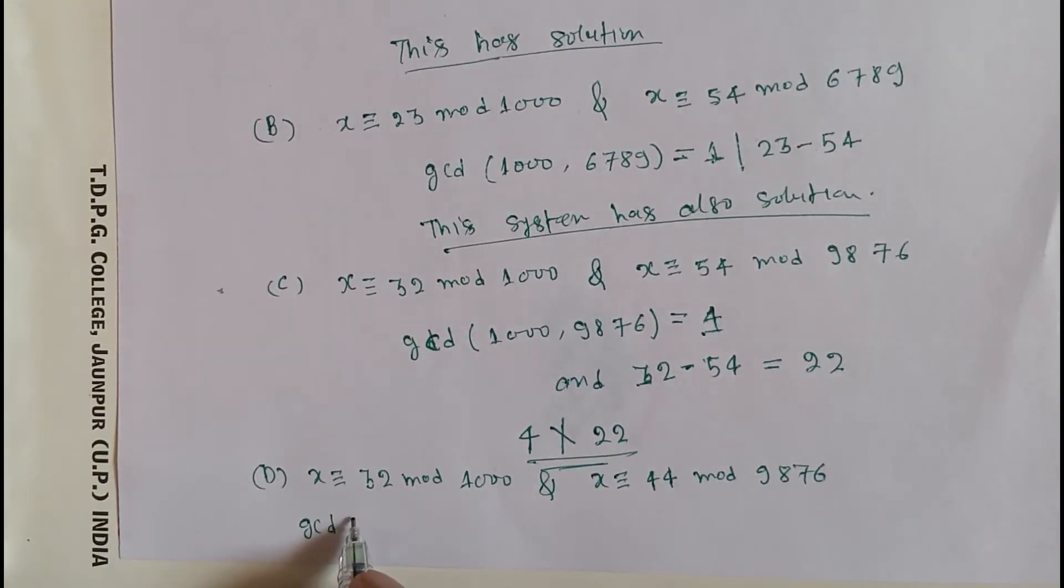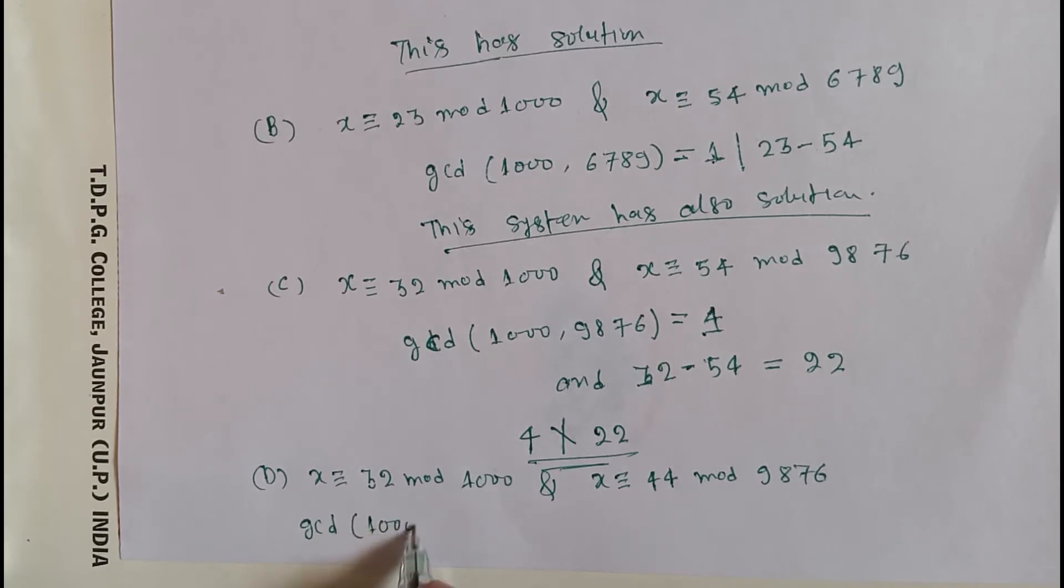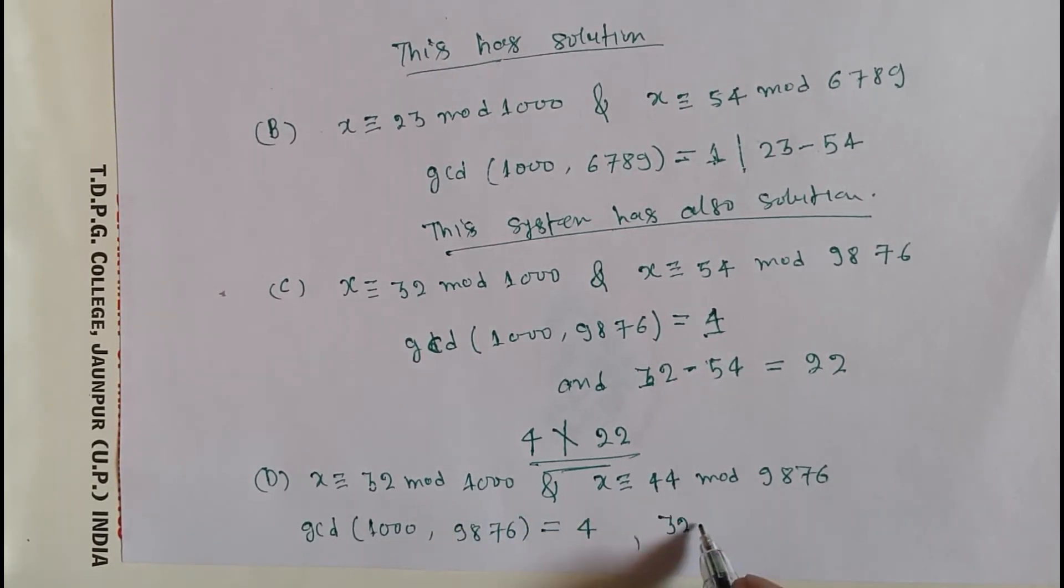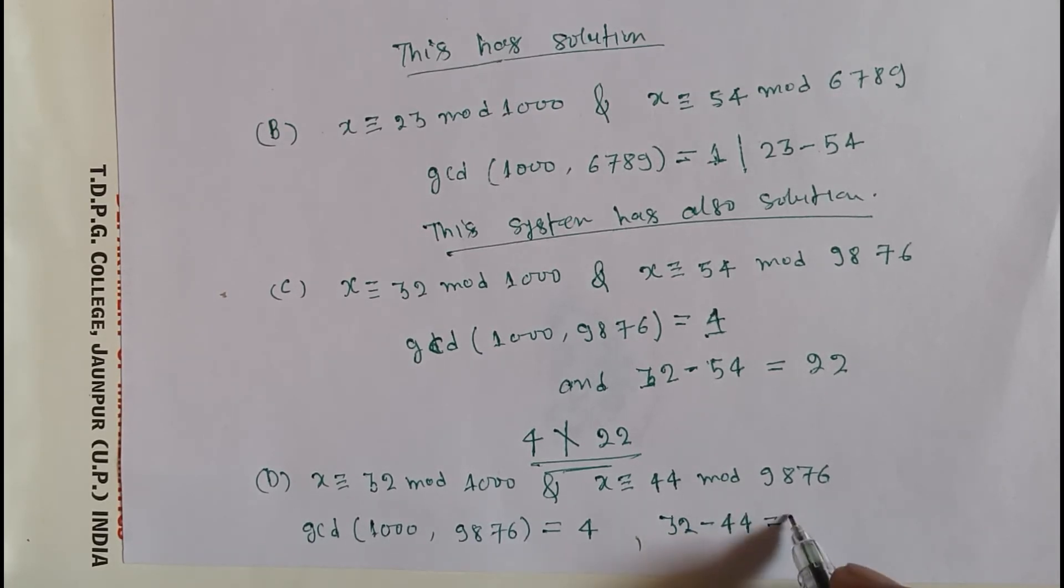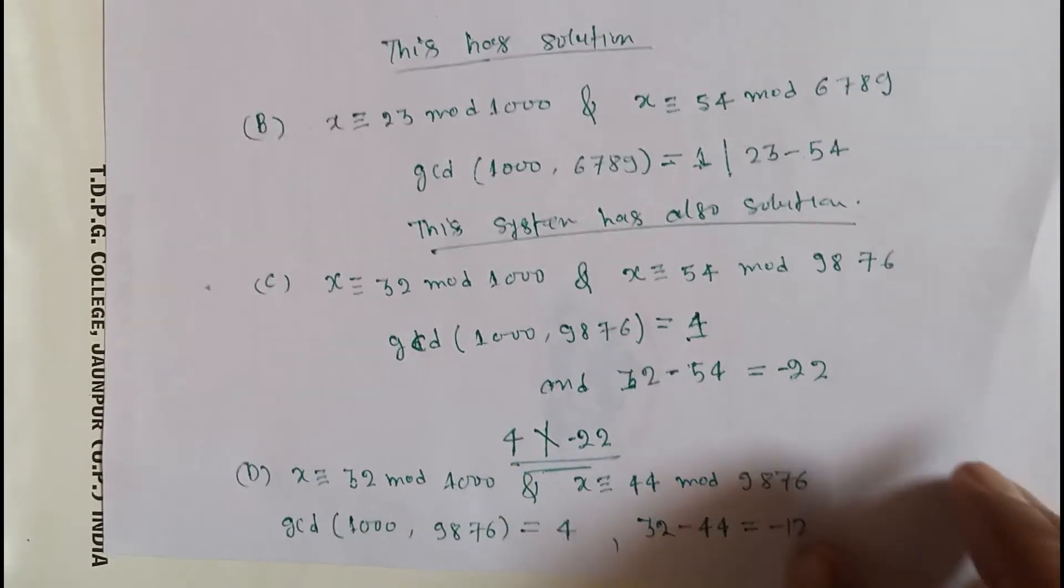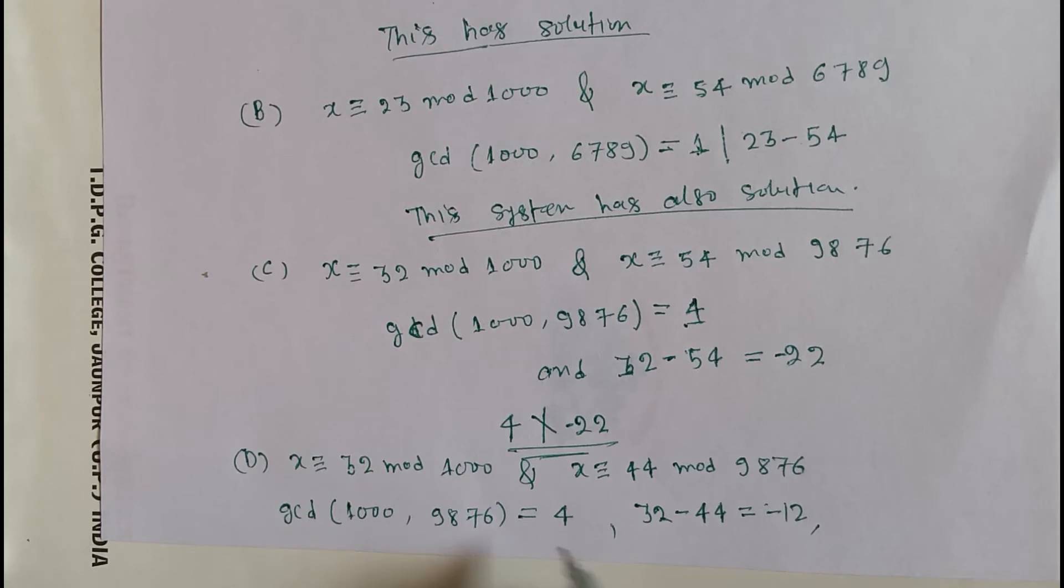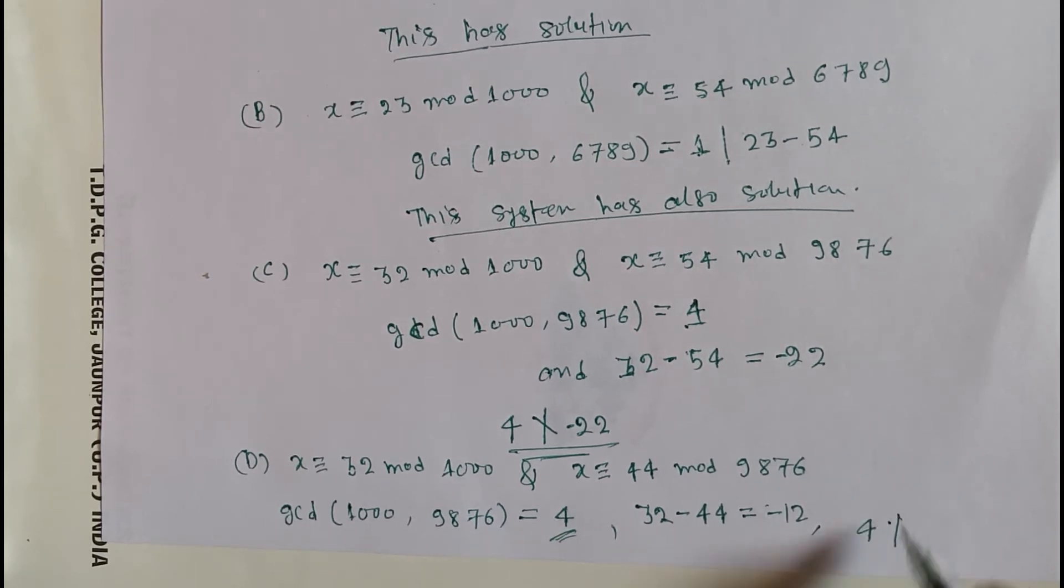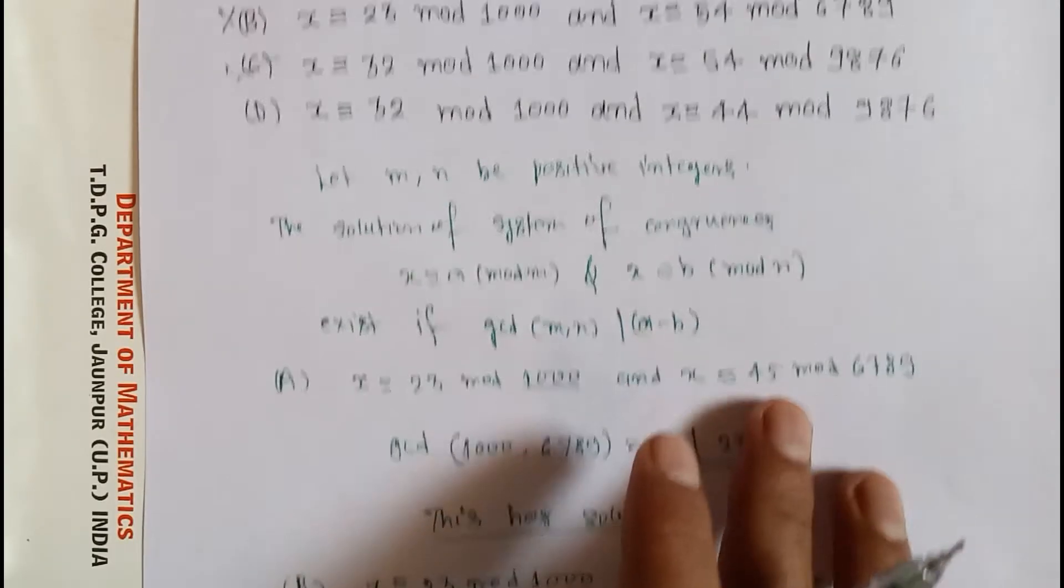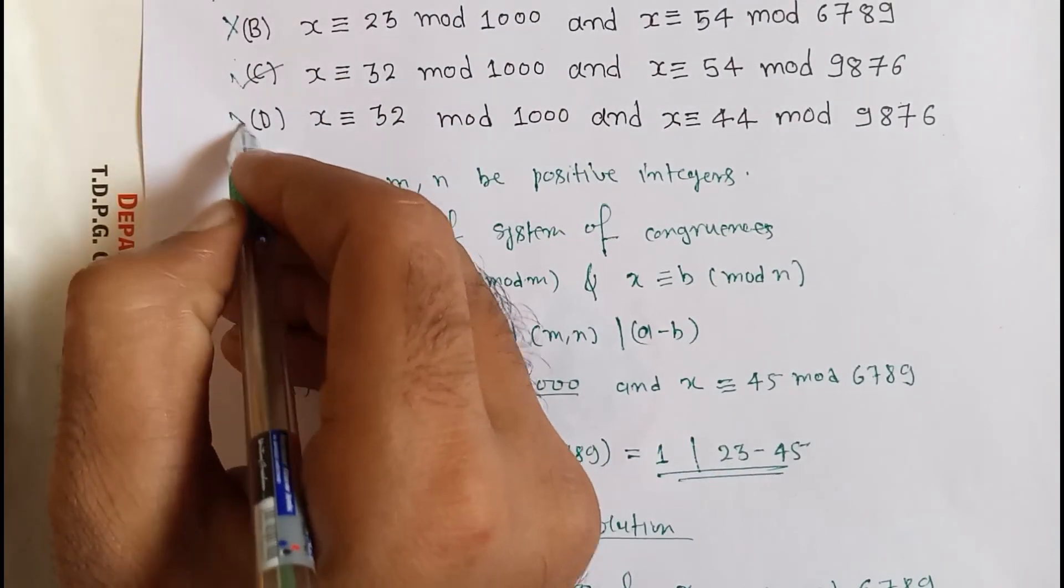The greatest common divisor of 1000 and 9876 is equal to 4, and 32 minus 44 is equal to minus 12. Here, 4 divides minus 12, so option D is not correct.